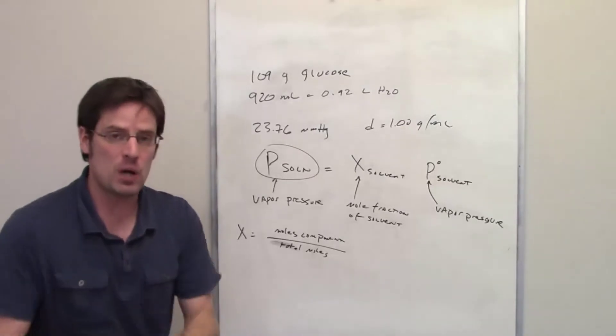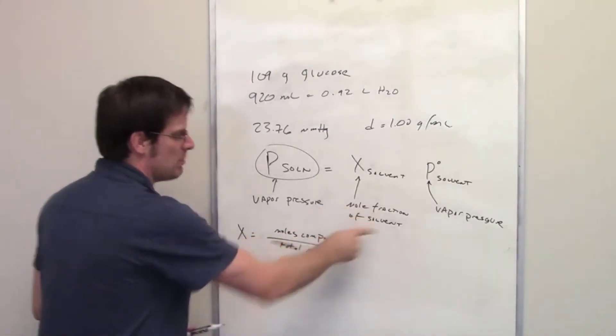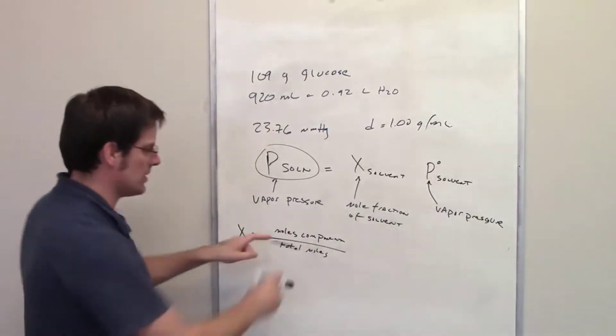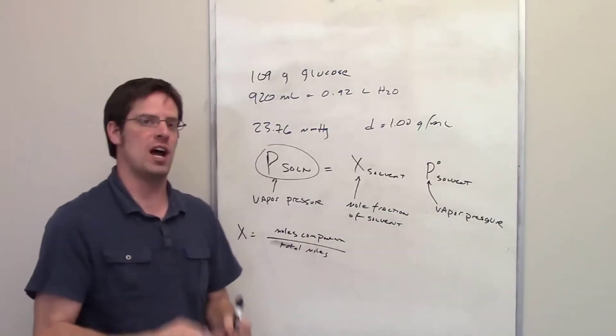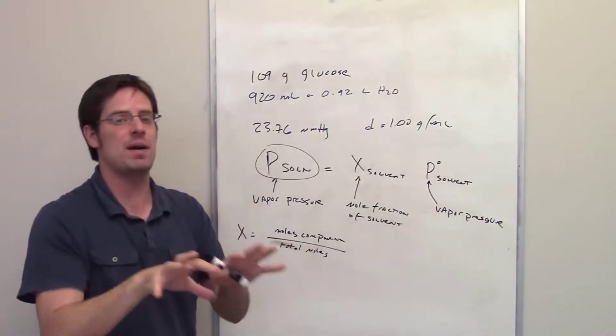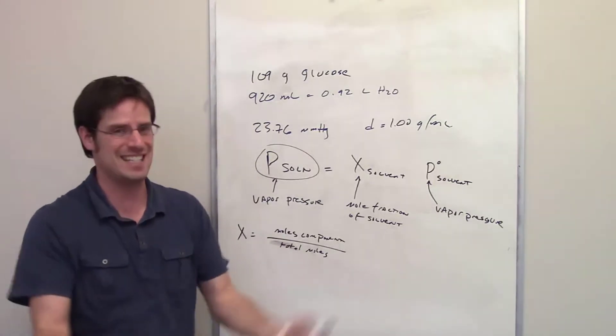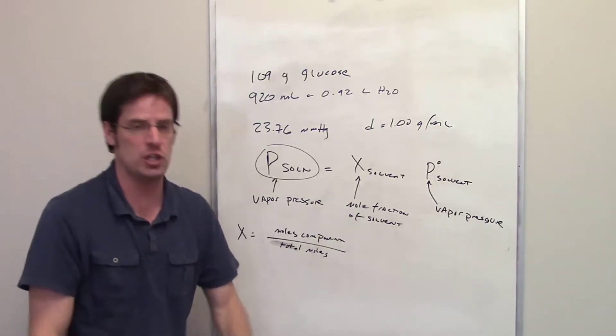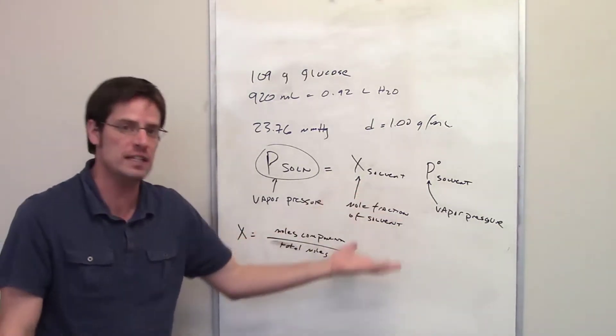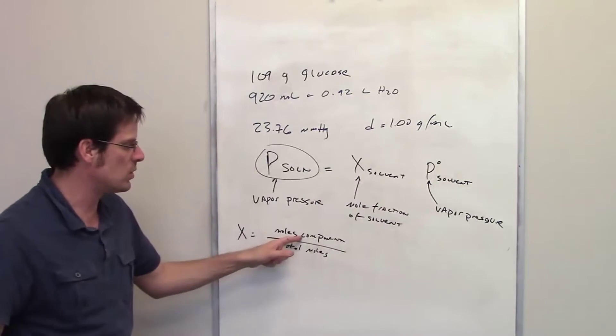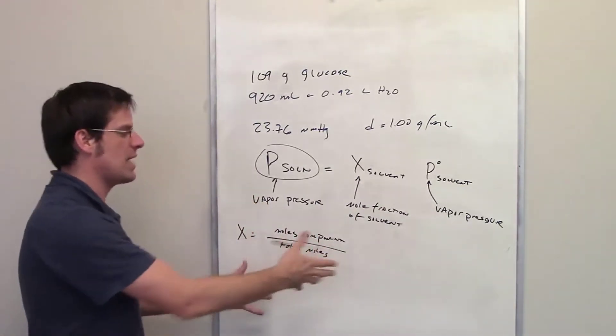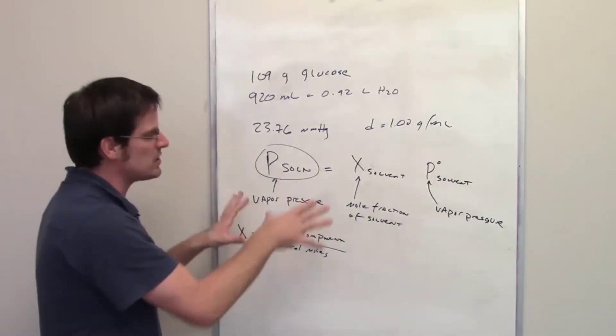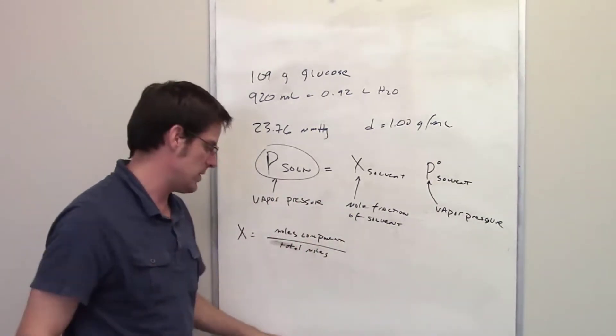In a previous problem, I calculated the mole fraction of a solute. But did you know that you can actually calculate a mole fraction of anything in the solution? You can calculate the mole fraction of the solvent as well, just by putting the number of moles of the solvent in the numerator divided by the total number of moles of solvent and solute together. For Raoult's Law, that's actually what we have to do in this case.